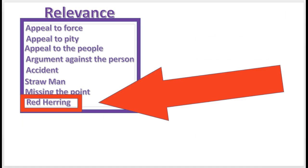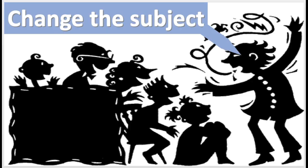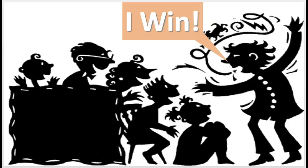The red herring is the fallacy of relevance. The red herring is committed when an arguer distracts the audience by changing the subject, and then the distractor concludes that he has won the argument.